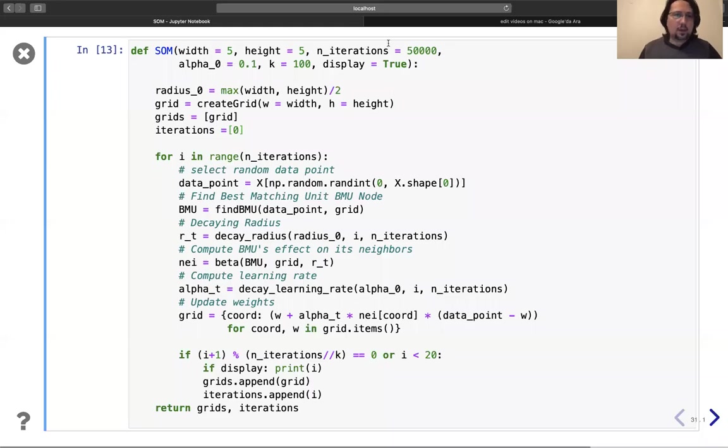Now we have finished our self-organizing map in Python, so we are ready to play with our code. This is the self-organizing map code. As you see, each time the weight of the grids changes and it stores the grid in the grids.